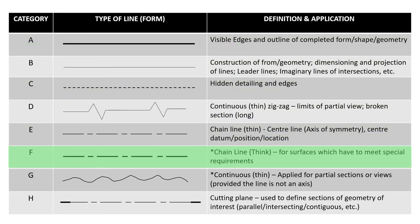The other type of line is basically similar to category E. This is what we call the chain line thick effect. This is basically for defined surfaces that more or less have some form of special requirement. Down the line we'll go into detail relating to this particular type of line.